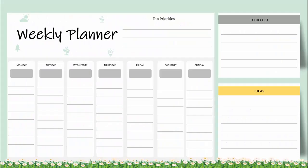In today's tutorial I'm going to show you how to create a weekly planner template in PowerPoint. This is how the slide looks — I've added the text 'Weekly Planner', and here you can put the top priorities for this week. At the bottom I've put all the weekdays starting from Monday till Sunday, where you can add the date and more detailed text.